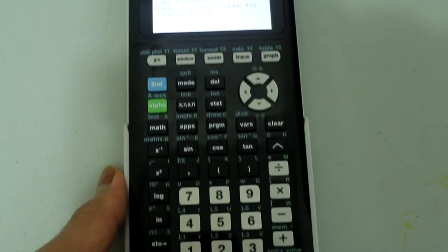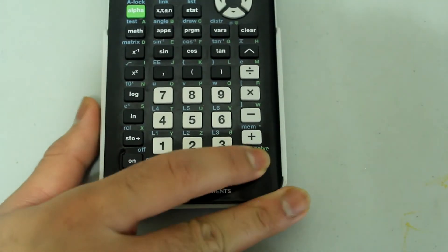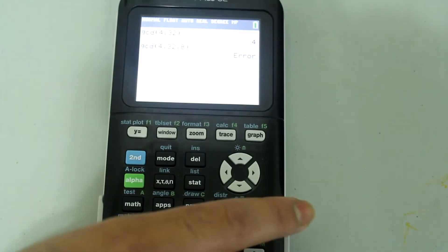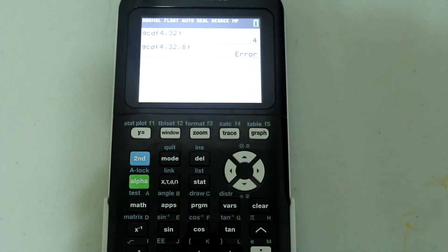So let's exit this error message. So press enter. And the way to find the greatest common divisor for three or more numbers is to use multiple GCD commands.